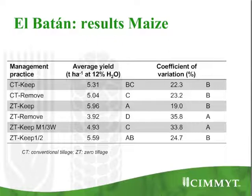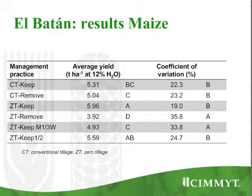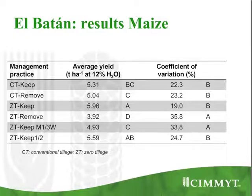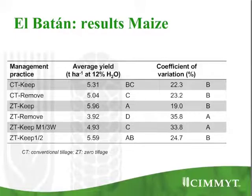As a scientist we like numbers. Looking at the two last lines: zero tillage where we keep the residue gives an average of 5.96 tons per hectare. Where we only leave one third of the wheat straw but leave all the maize straw, we get around 5 tons per hectare. And in zero till where we keep half of the straw of maize and half of the straw of wheat, we get 5.59 tons per hectare.